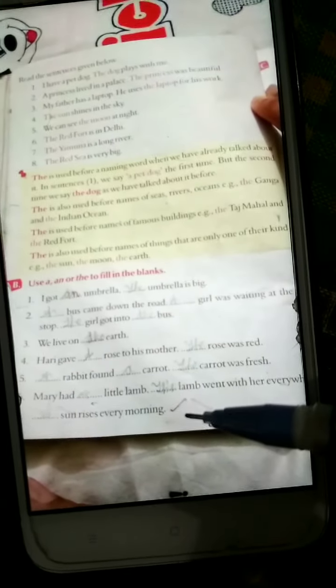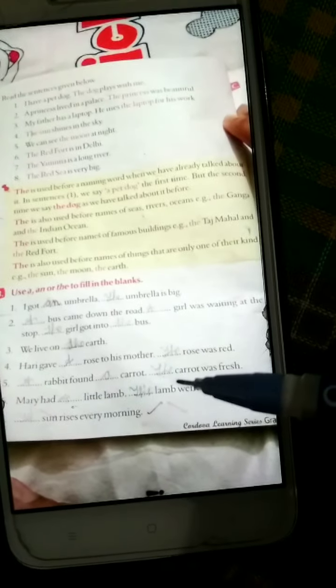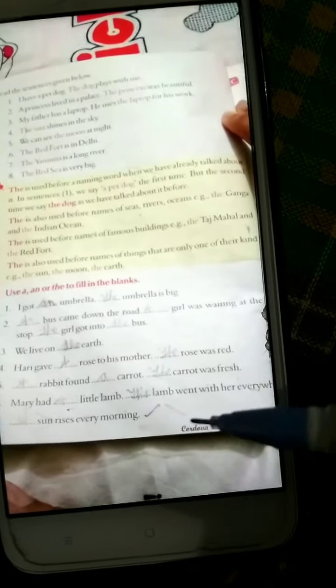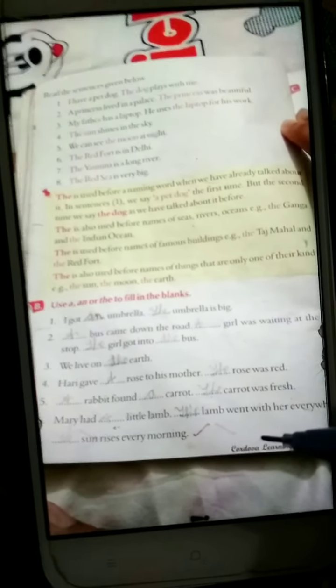Sun rises every morning. With sun, what do we use? 'The'. You know, with earth, sun, moon, we will use 'the'. I hope you have understood it and writing should be neat and clean. Try to do more practice and the remaining chapter we will do in the next video. Okay, thank you.